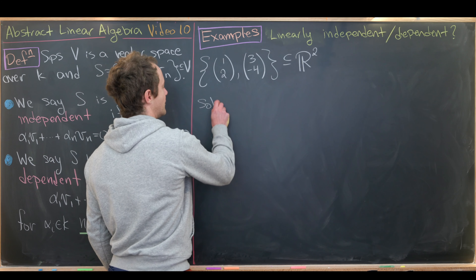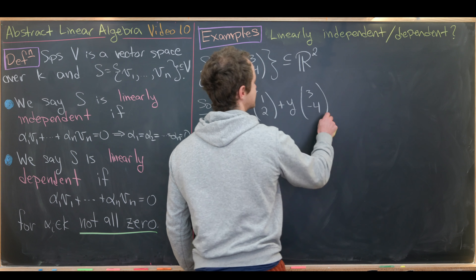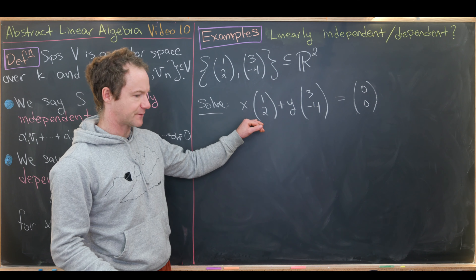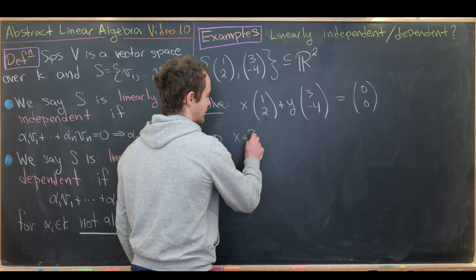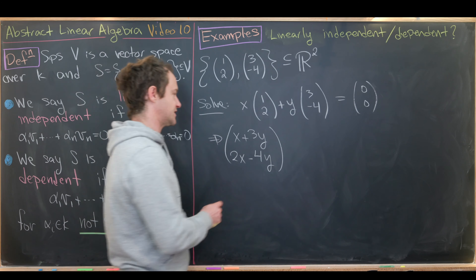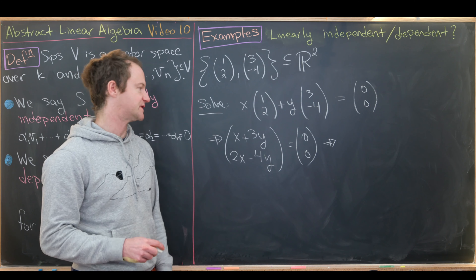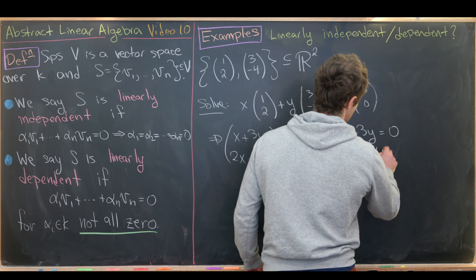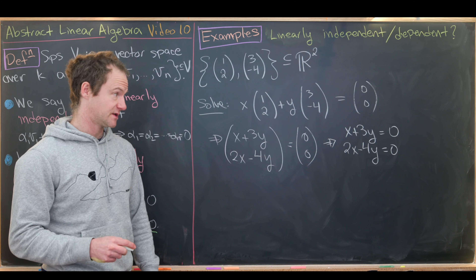We solve: x·[1,2] + y·[3,-4] = [0,0]. Using scalar multiplication and vector addition, this gives x + 3y = 0 and 2x - 4y = 0 as two scalar equations.